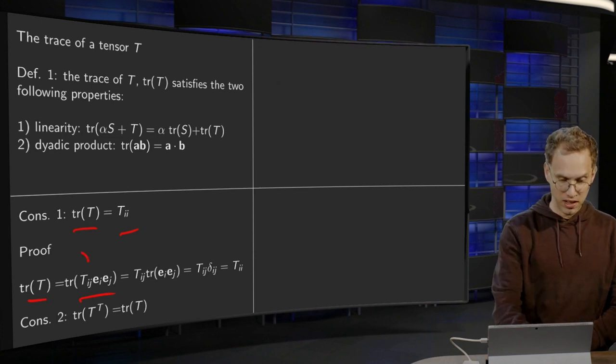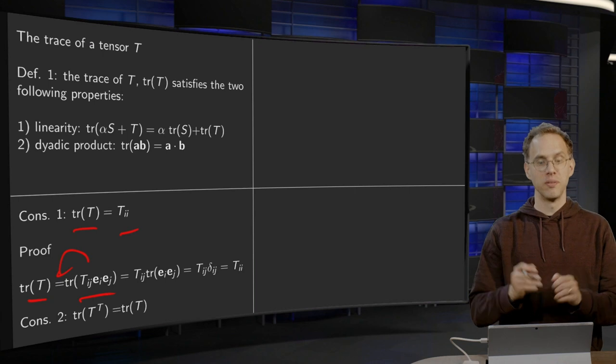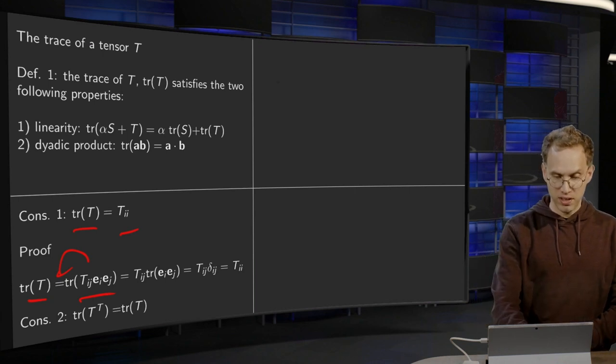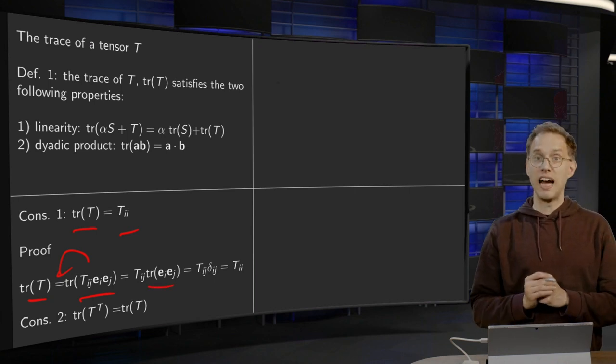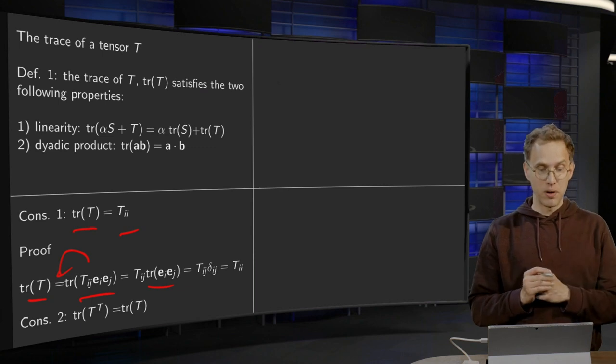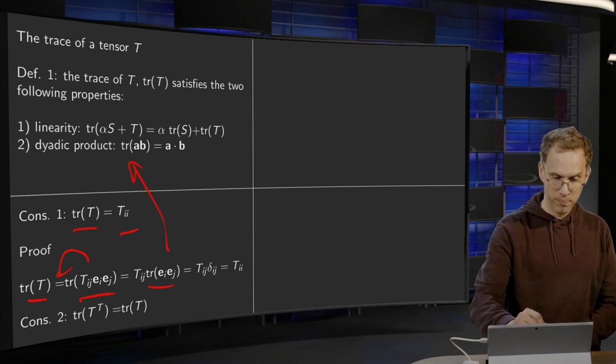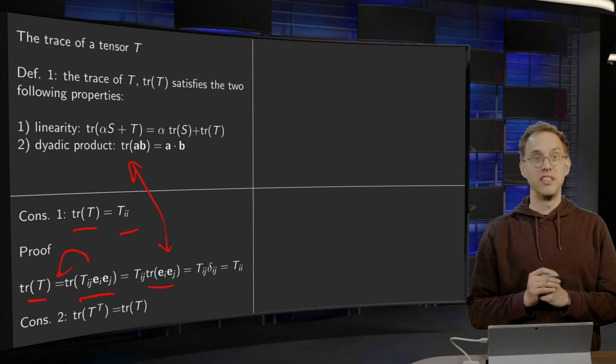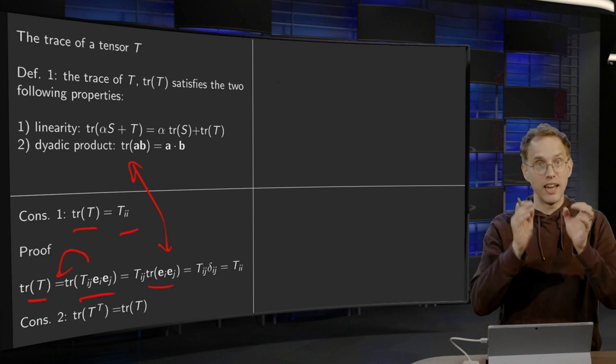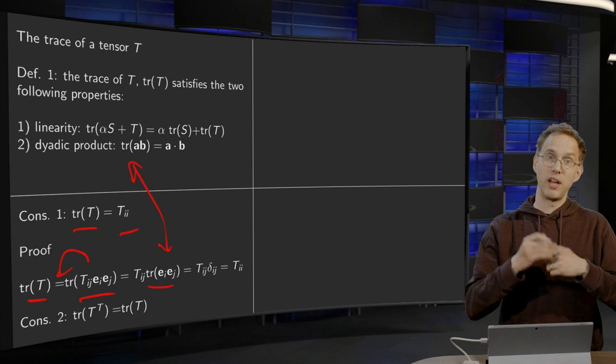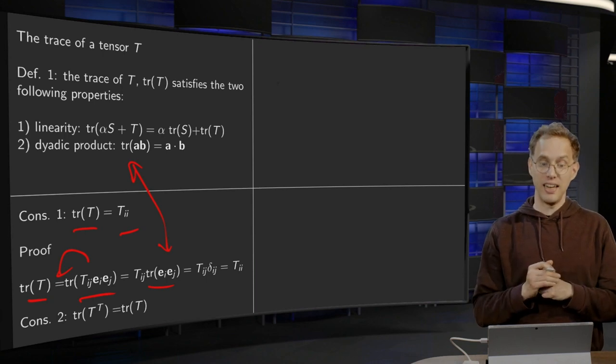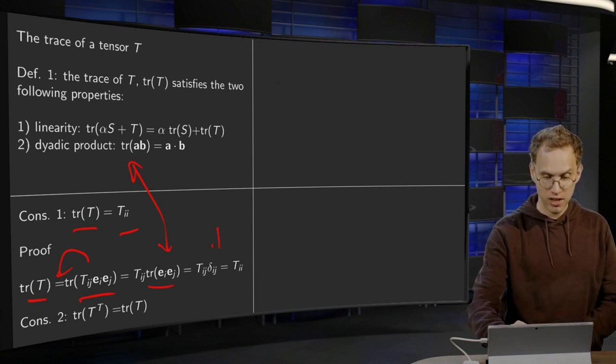which means that we can take the Tij in front. So we are left with Tij times the trace of ei⊗ej. And now we use the definition over here. The trace of the dyadic product is the inner product between a and b, so the inner product between ei and ej, which is just δij.